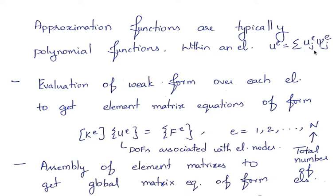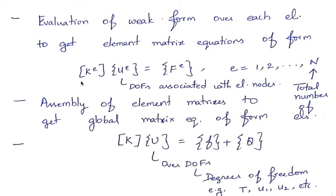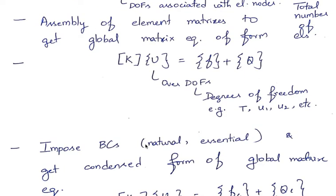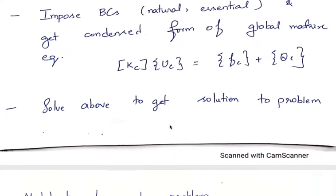Once you write down the solution like this and take the weight functions to be psi_ei, the weak form can be written in matrix form as K^e U^e equals F^e. After that we assemble the matrices, impose the boundary conditions, and finally solve for the unknown degrees of freedom. This was the generic overview of the finite element method.